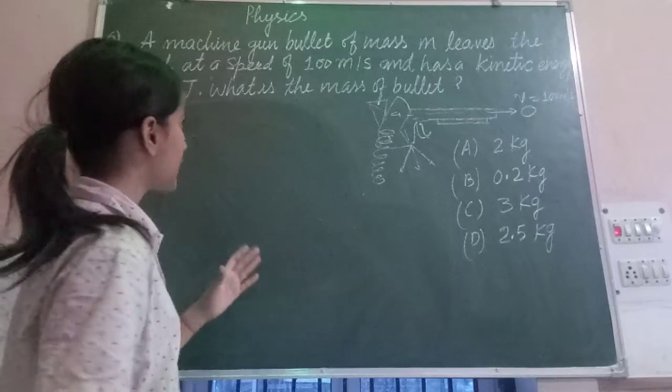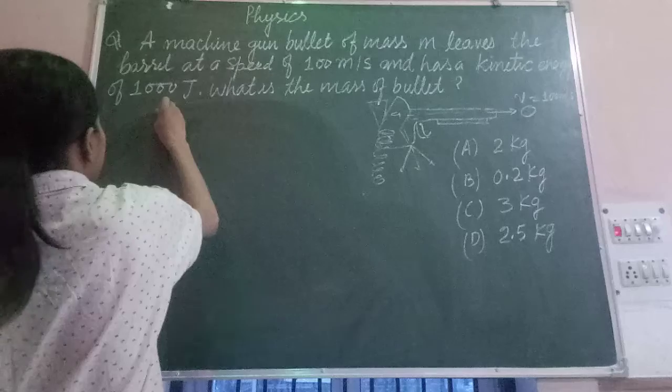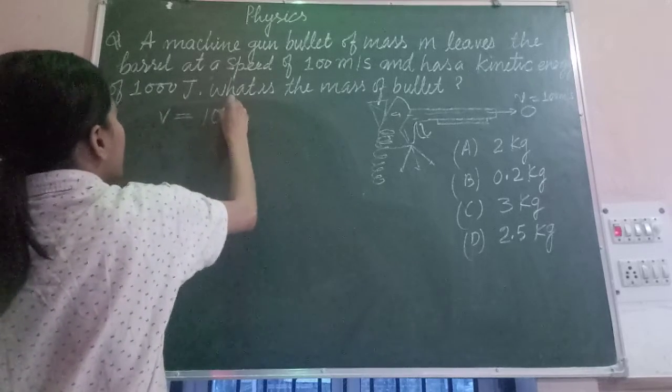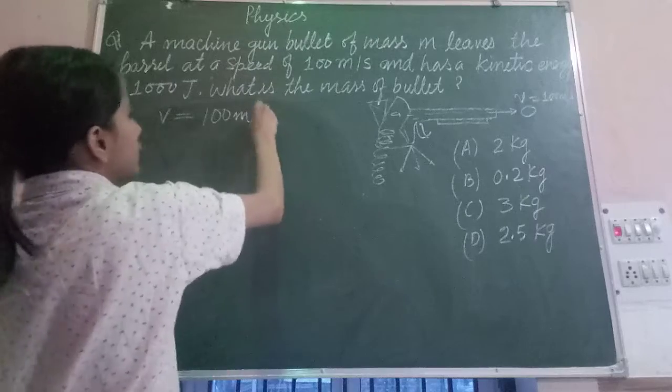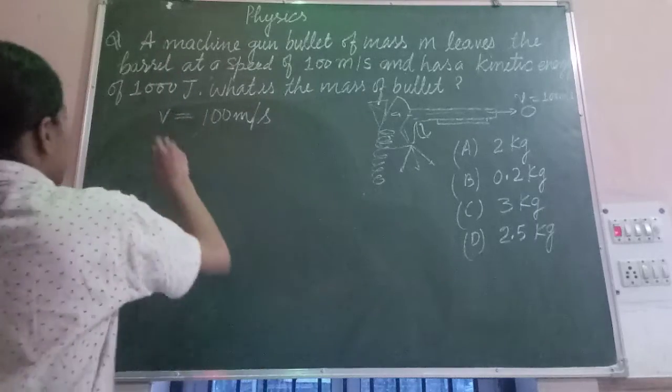We will put the values which are given. Speed is already given, that is 100 meters per second, and kinetic energy is 1000 joules.